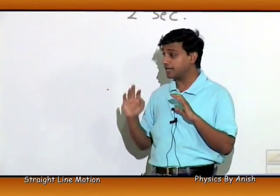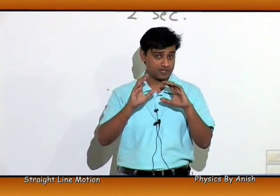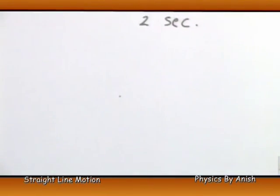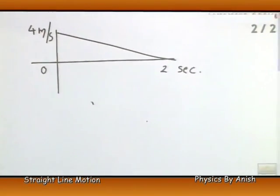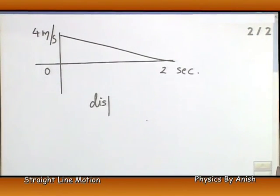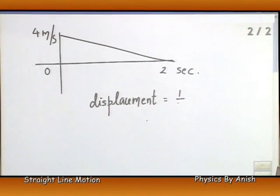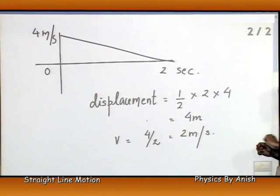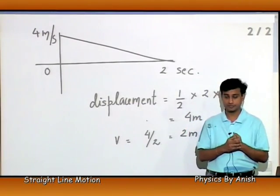First, find the rectangle area, then displacement, then divide by time to get average velocity. The velocity over 4 divided by 2 is 2 meters per second. Are you clear? Next problem.